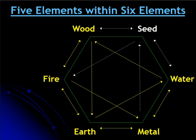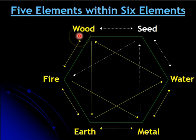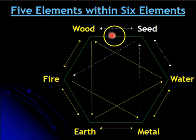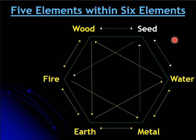Here in yellow we see the five elements: from wood, to fire, to earth, to metal, to water, and then back to wood — that's five element theory. But then in six elements, an extra element is added: seed, between water and wood. You can see these white lines showing how seed is going to be added to five element theory to get the six element model.